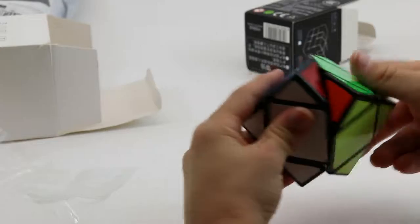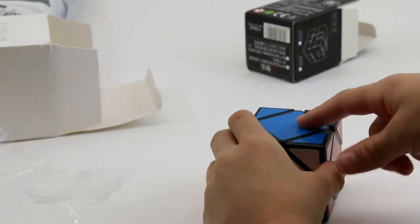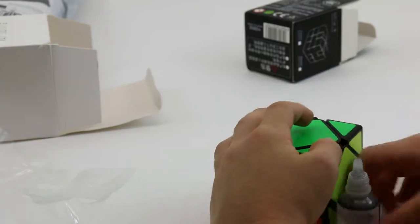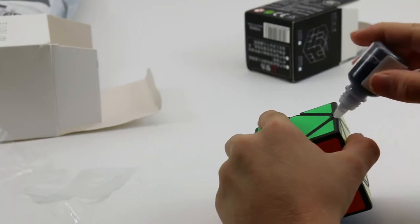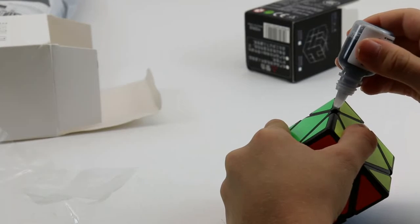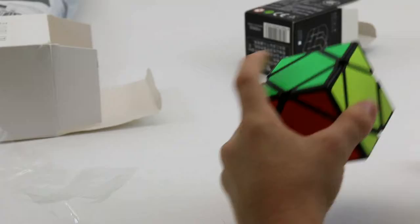Anyway, here's a true test of the DNM-37. This QiYi Skewb. It's really slow. So, let's give it a go. I want to see if anything can speed this up. So, I just put two drops in.